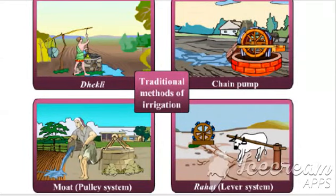The next step in agricultural practices is irrigation. Irrigation refers to the artificial application of water to the soil for assisting the growth of crops.